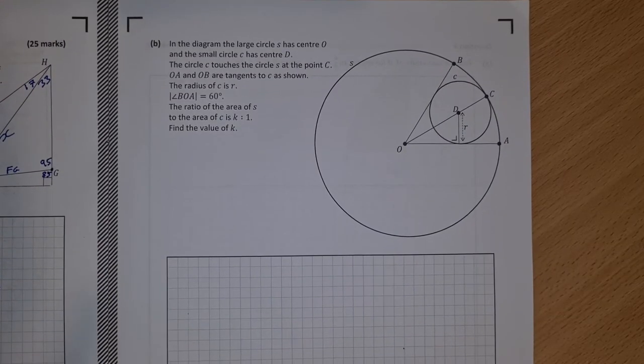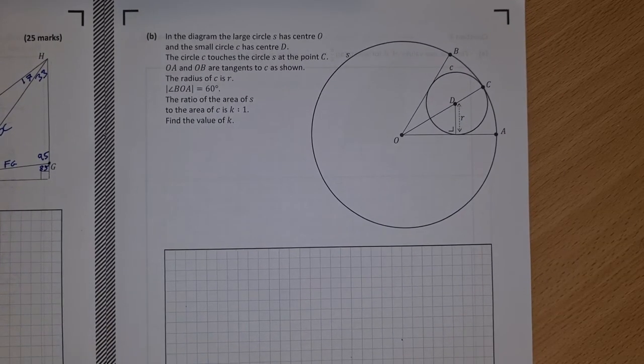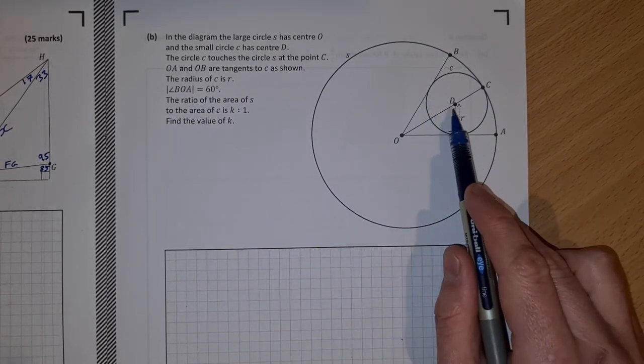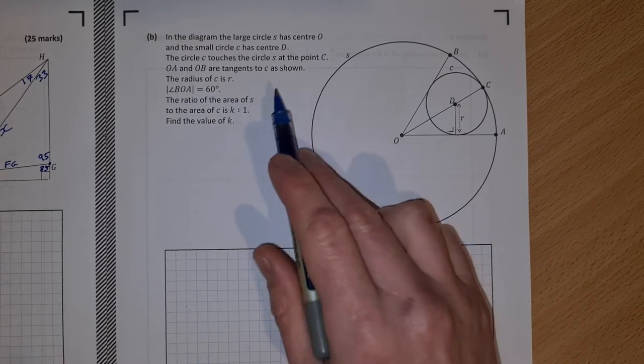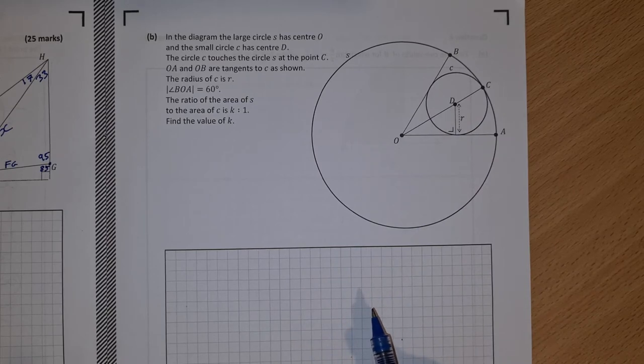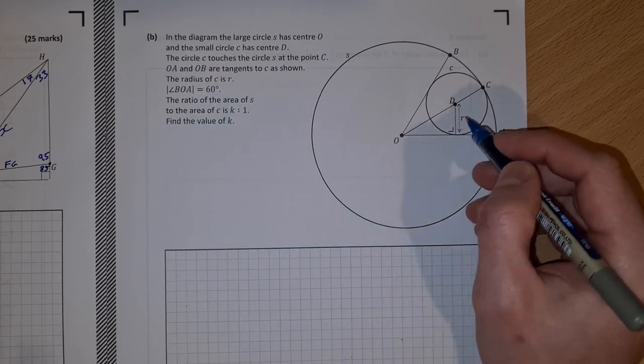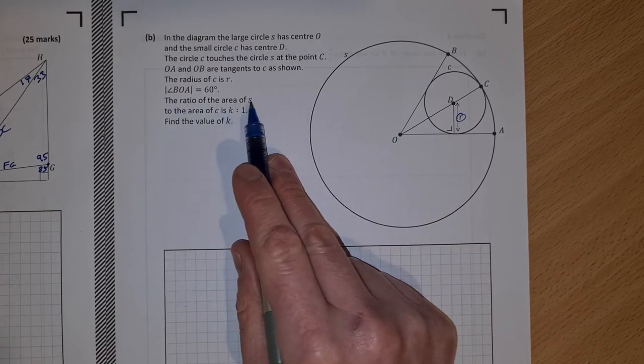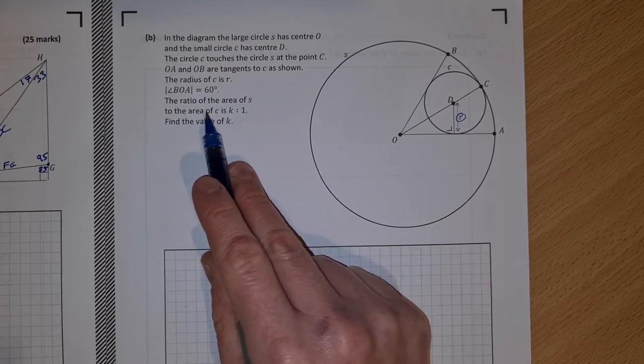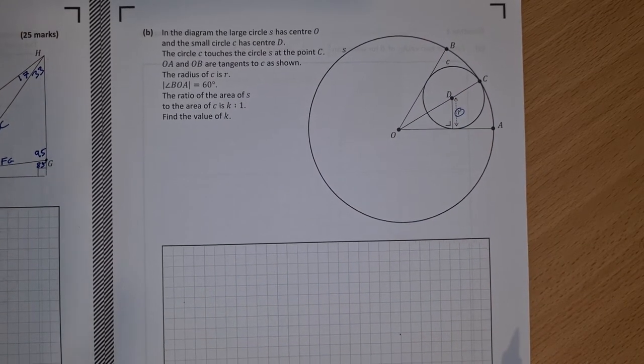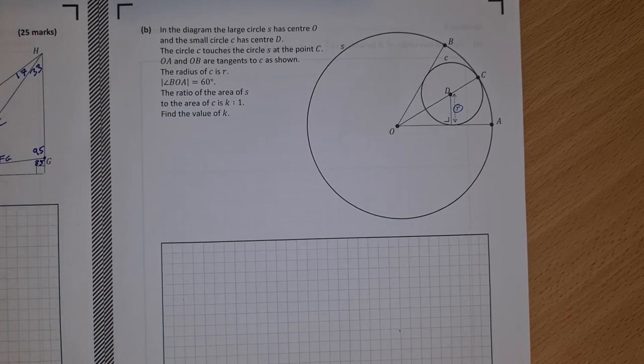Okay, on to part B then. In the diagram, the large circle S has center O, the small circle C has center D. The circle C touches the circle S at the point C. OA and OB are tangents to the smaller circle. The radius of C is r and this angle here is 60 degrees. The ratio of the area of S to the area of C is k to one, so the area of the big one is k times bigger than the area of the small one. Find the value of k.